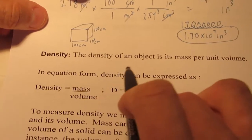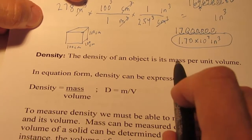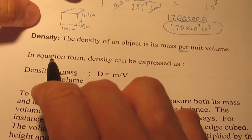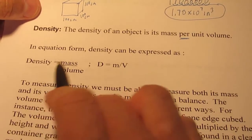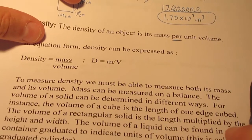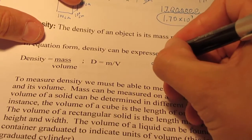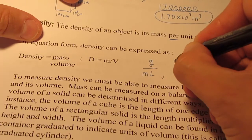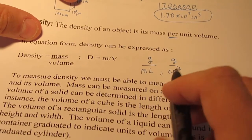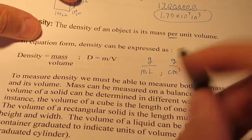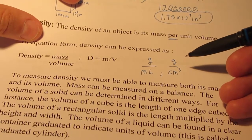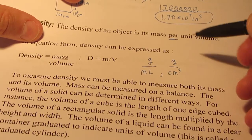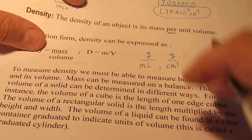Let's talk about density. The density of an object is its mass per unit volume. So in equation form, density can be expressed as density equals mass divided by volume, or D equals m over V. In chemistry we like to use grams per milliliter, which is the same as grams per cubic centimeter. This is our preferred unit in chemistry.